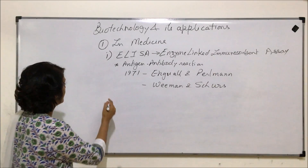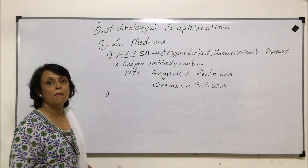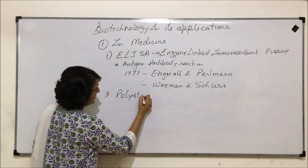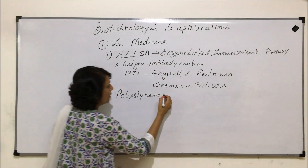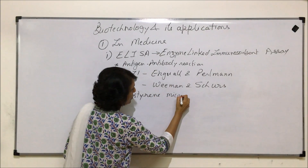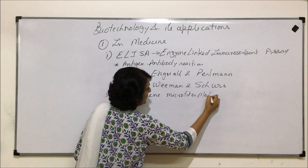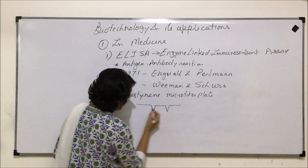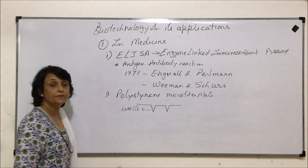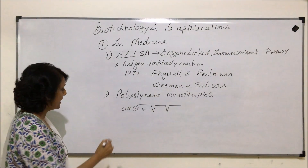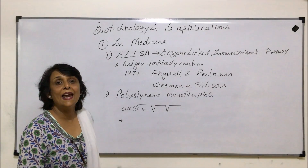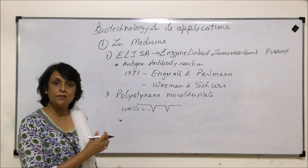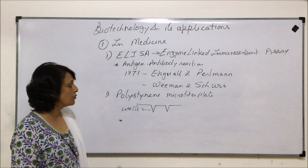Now let us exactly see what happens. There is a microtiter plate which is normally made up of polystyrene — this is called a polystyrene microtiter plate. This plate has depressions, and these depressions are known as wells. The first thing that is done is antigen is adsorbed on the surface. We will take an example to understand each and every step so that it becomes absolutely clear.